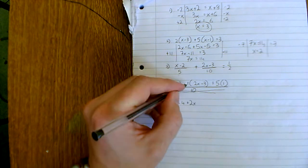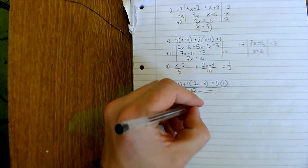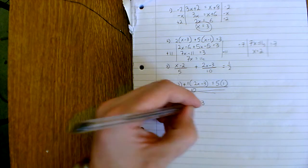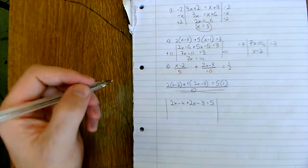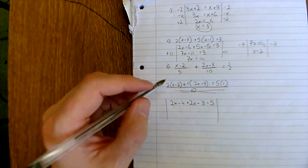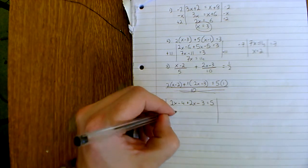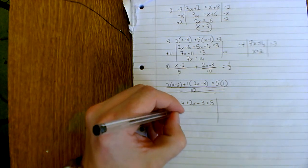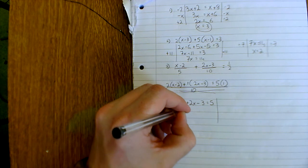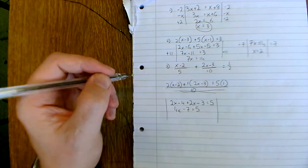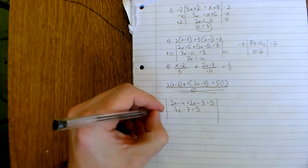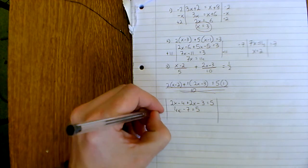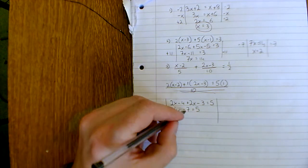Again, now I just tidy it up. So 2x and 2x is 4x, minus 4 minus 3 is minus 7, and that equals 5. Okay, now I want to bring my x's to this side, so it's 4x minus 7. So plus 7 and get rid of that minus 7.